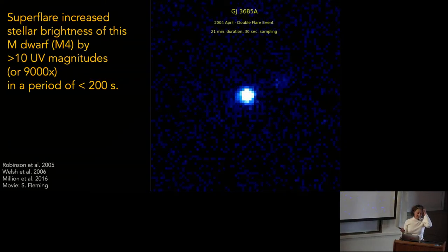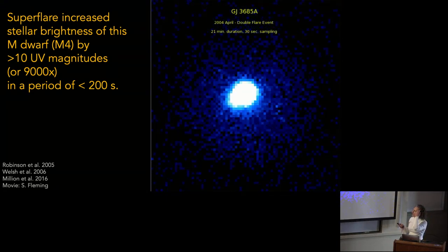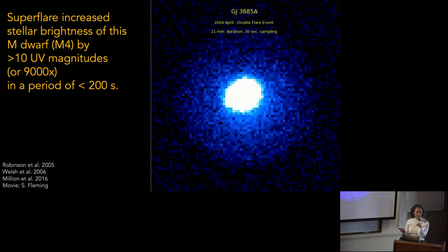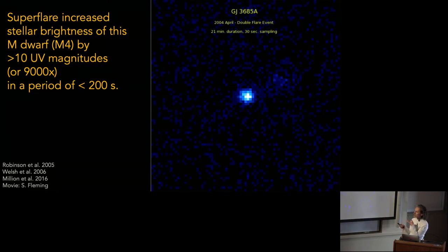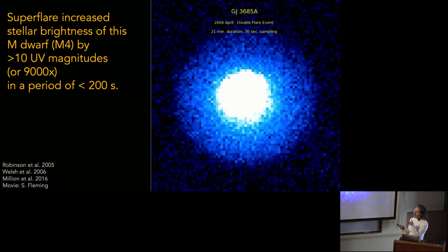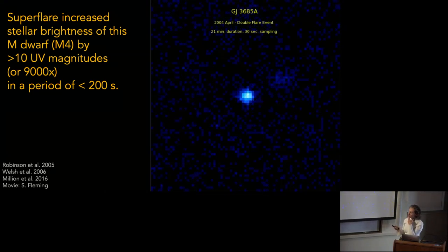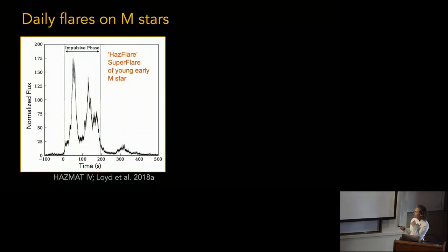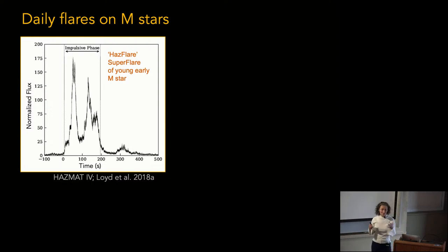Beyond quiescent evolution, there's also the evolution of flares. It's been quite amazing to see all the effort going into looking at flares from low-mass stars. Here's one example from GALEX where you see an M4 — a mid-M — increase by a factor of 9,000 in 200 seconds. And whenever we look at M-stars with HST, we do find flares, whether you like it or not. People were also reporting lots of flares in their JWST spectra, which they were frustrated by but shouldn't have been surprised to see.